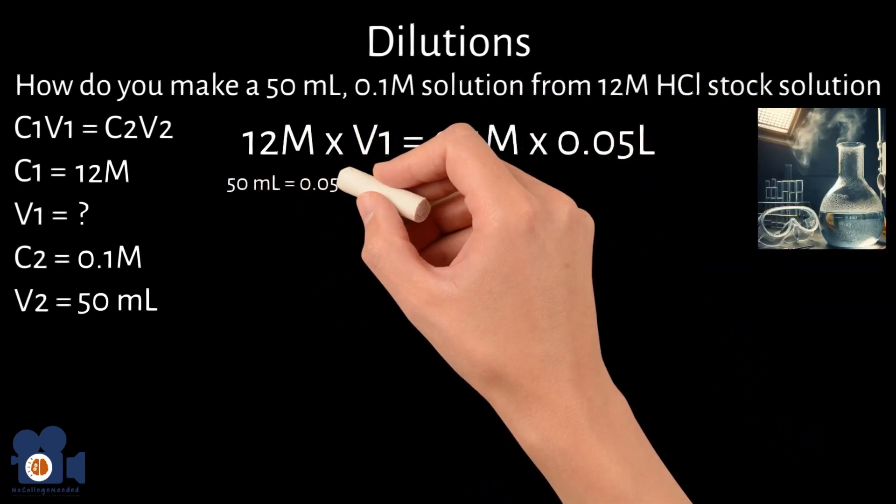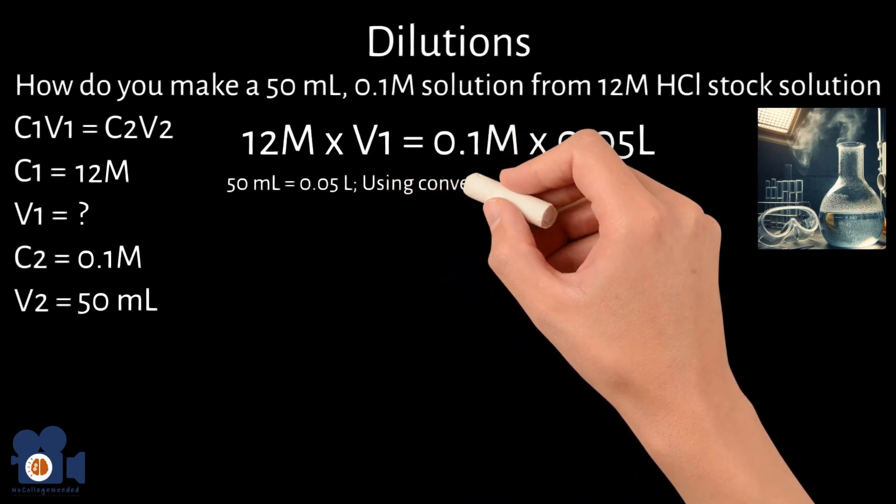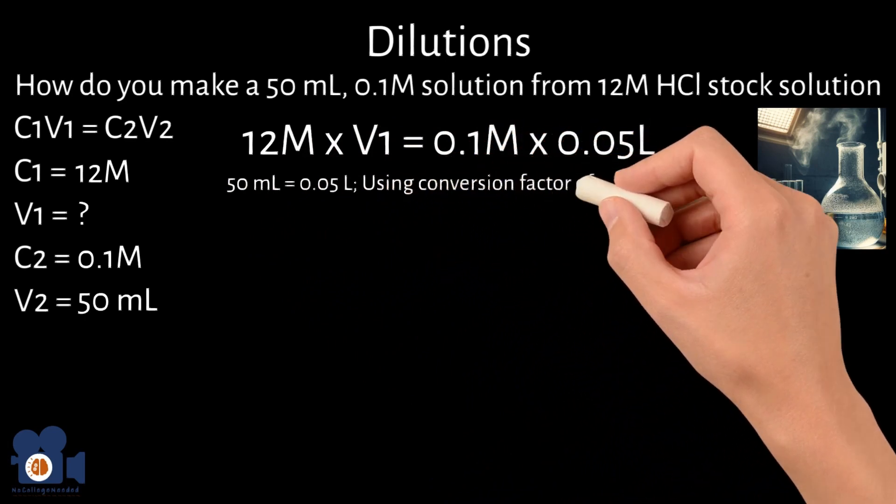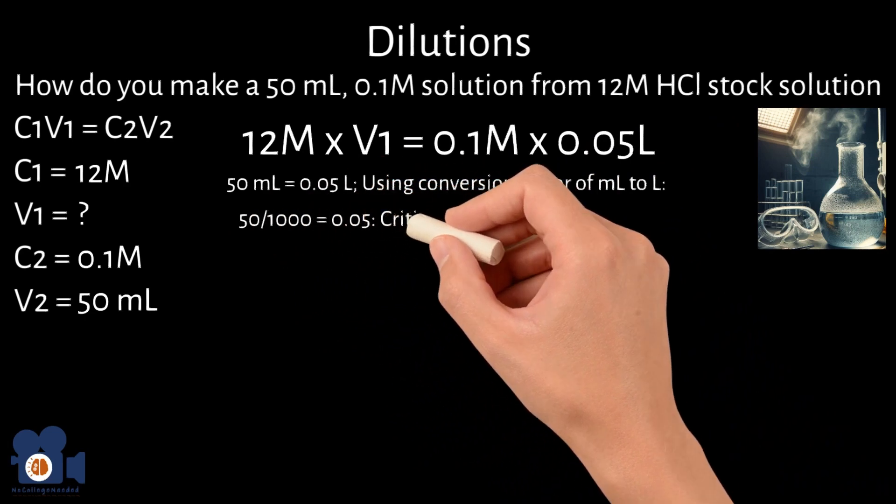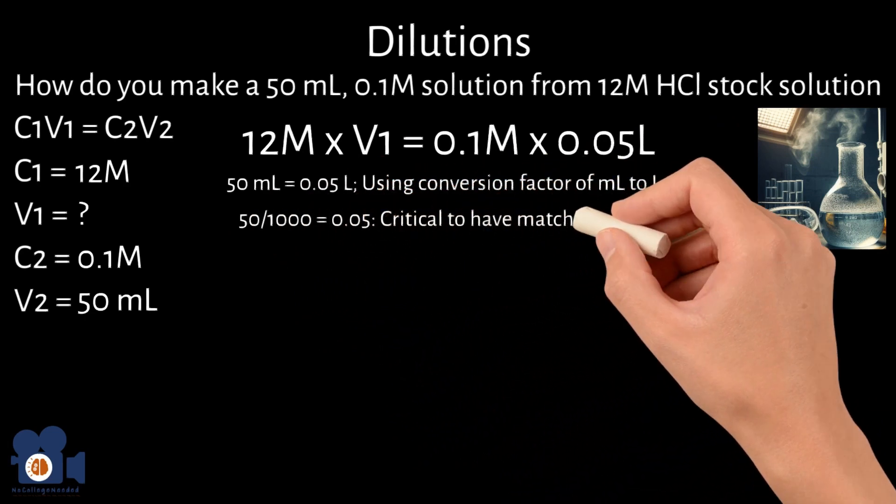The equation would look like 12 molar times V1 equals 0.1 molar times 0.05 liters. Remember, 50 milliliters is 0.05 liters, since using the conversion factor of milliliters to liters, 50 divided by 1,000 equals 0.05. It's critical to have matching units.